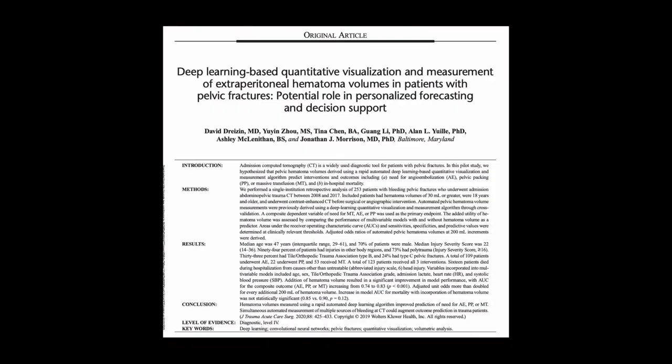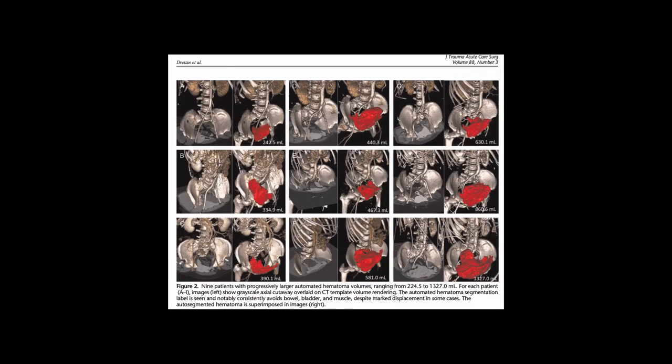There have also been deep learning AI algorithms that quantify retroperitoneal bleeding and give you a prognostic factor. As a rule of thumb in our practice, if you have a hematoma extending to proximal zone 2, or extending above the level of the sacrum, or extending to the preperitoneal space, you might be better off intervening early.